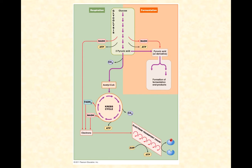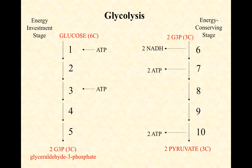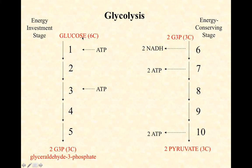Glycolysis can be broken into two major stages. It has 10 steps total — 10 enzymatically catalyzed steps in this biochemical pathway. We're going to start with glucose, a six-carbon sugar, and in the end we're going to end up with two three-carbon pyruvic acids. Pyruvate and pyruvic acid are the same term.